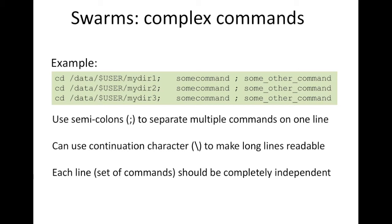If you have complex commands where you want each process to run a series of commands, you can separate them with semicolons on the line. For example, each subjob could CD to some directory, run one command, and then run another command. You can use the continuation character to make long lines more readable.